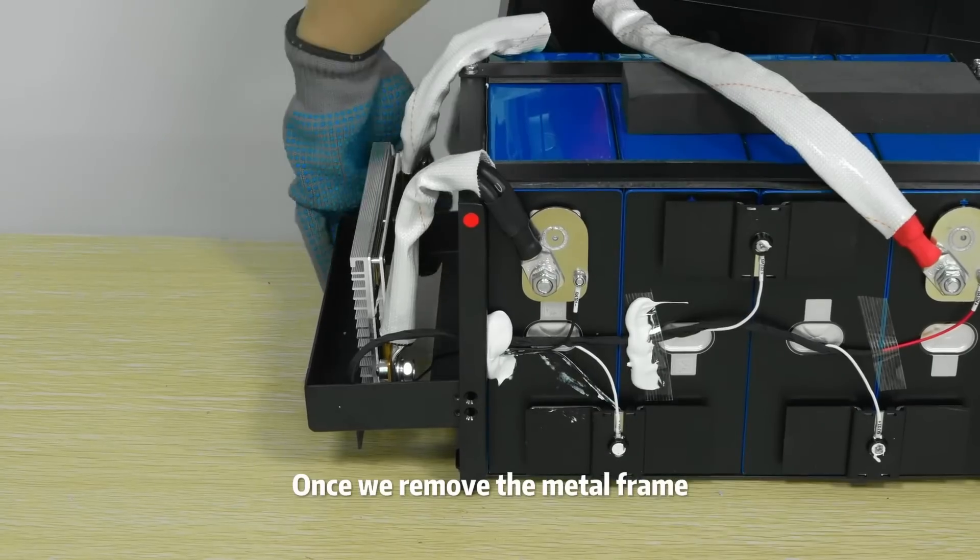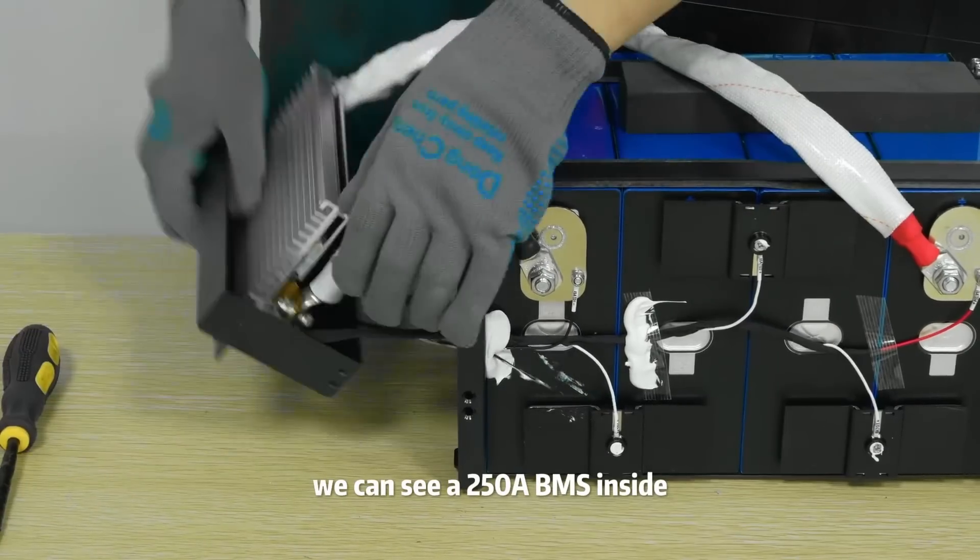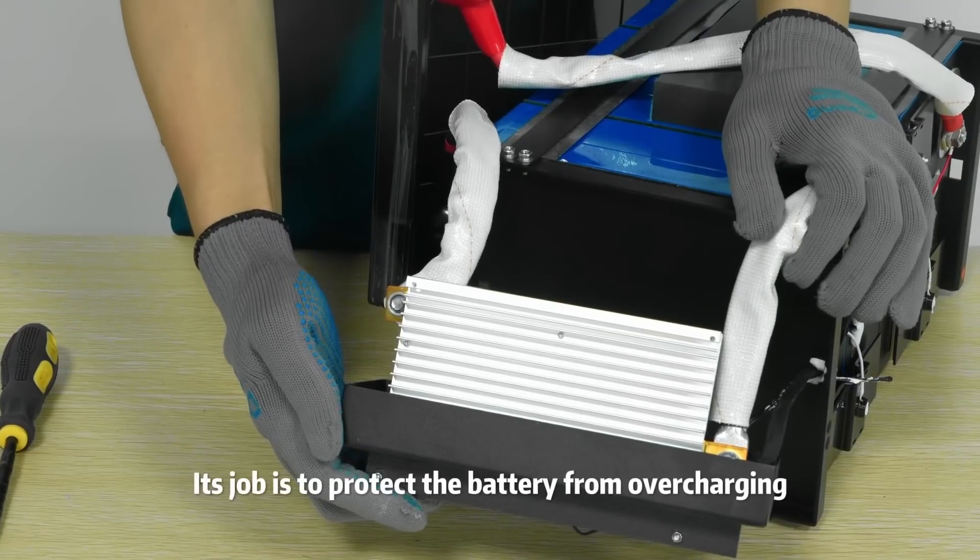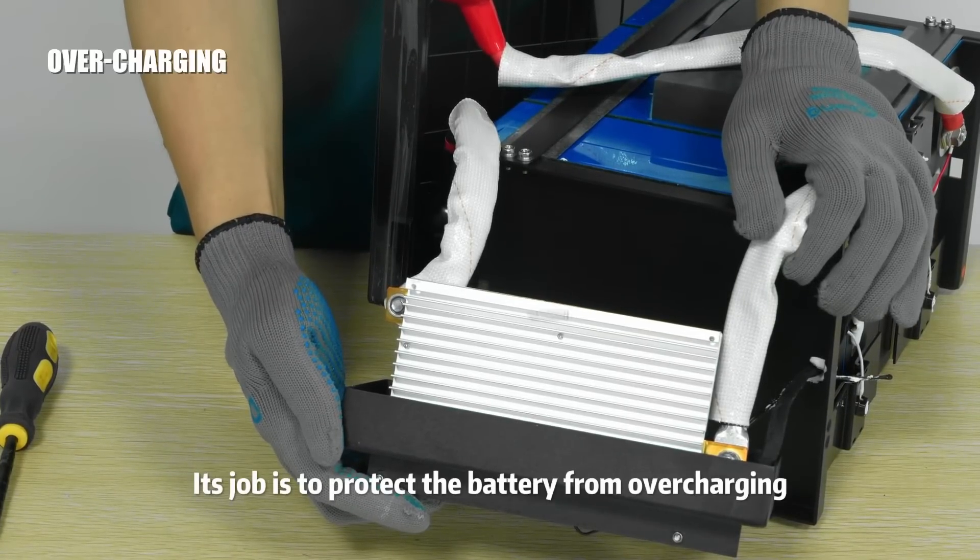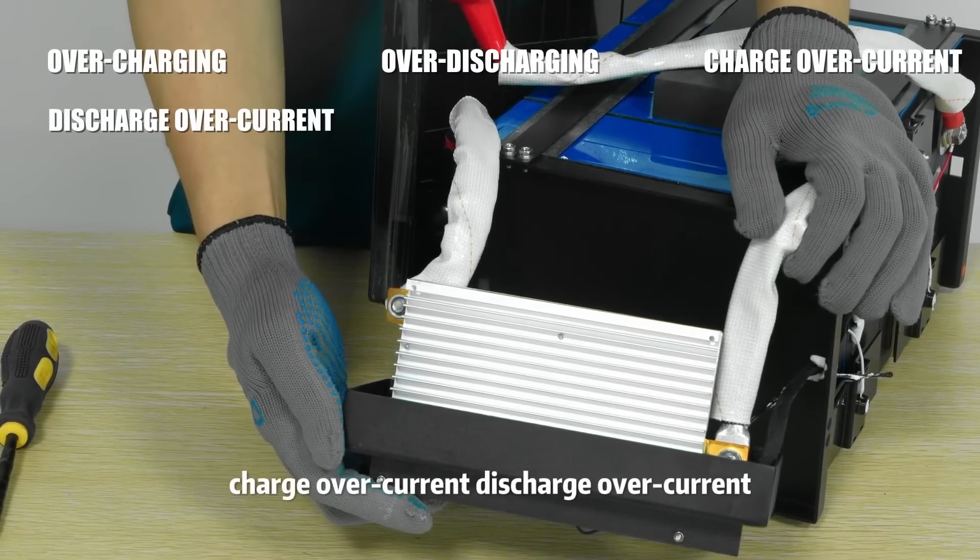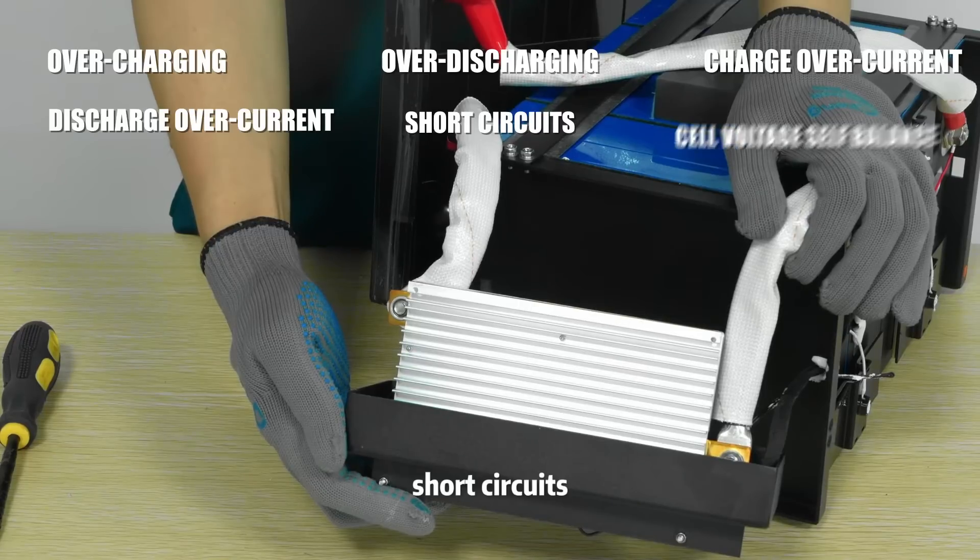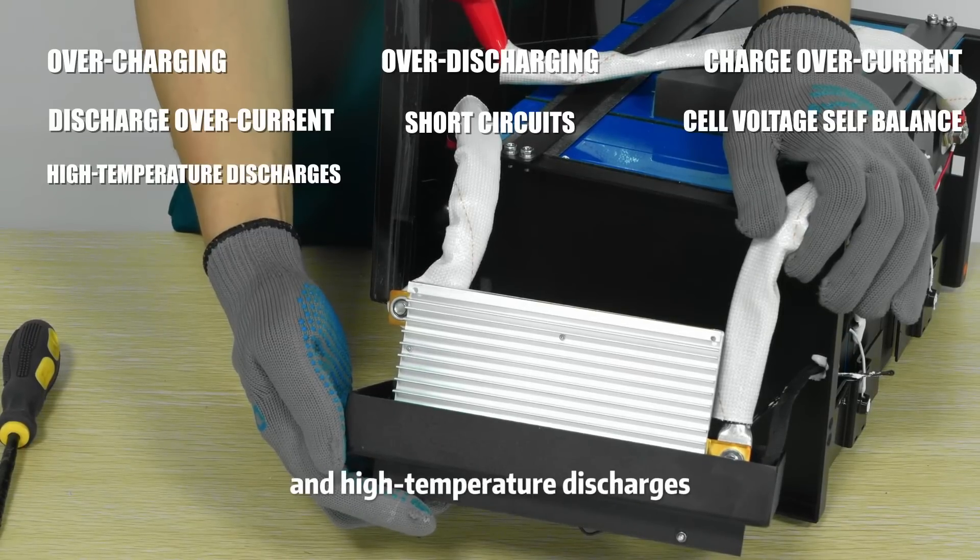Once we remove the metal frame, we can see a 250A BMS inside. Its job is to protect the battery from overcharging, overdischarging, charge overcurrent, discharge overcurrent, short circuits, cell voltage self-balance, and high-temperature discharges.